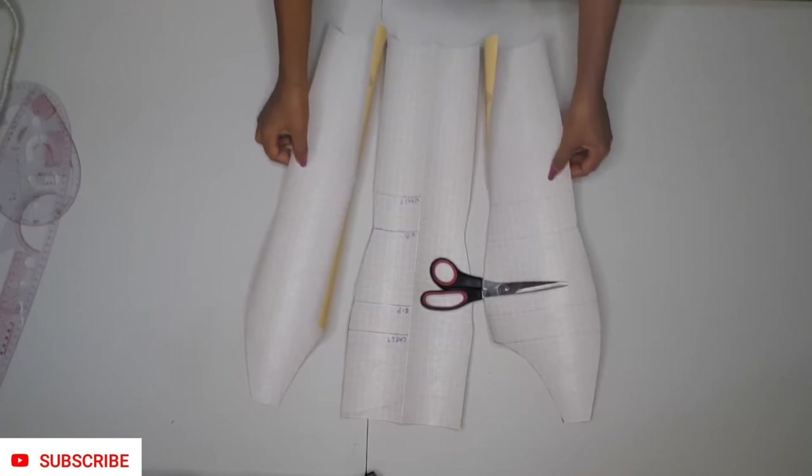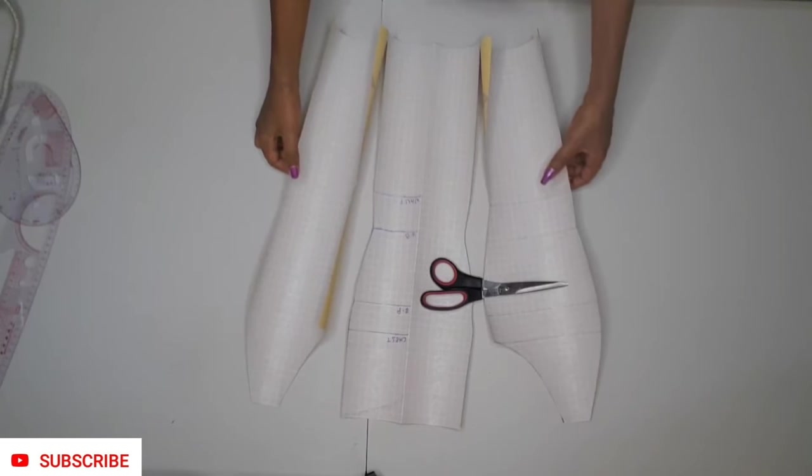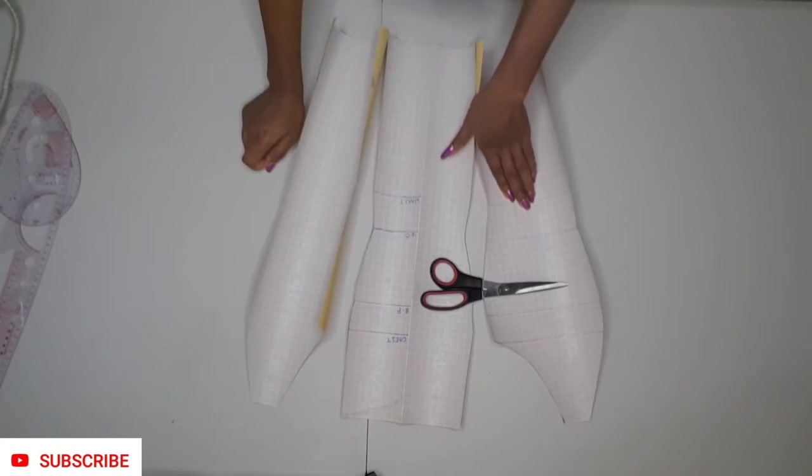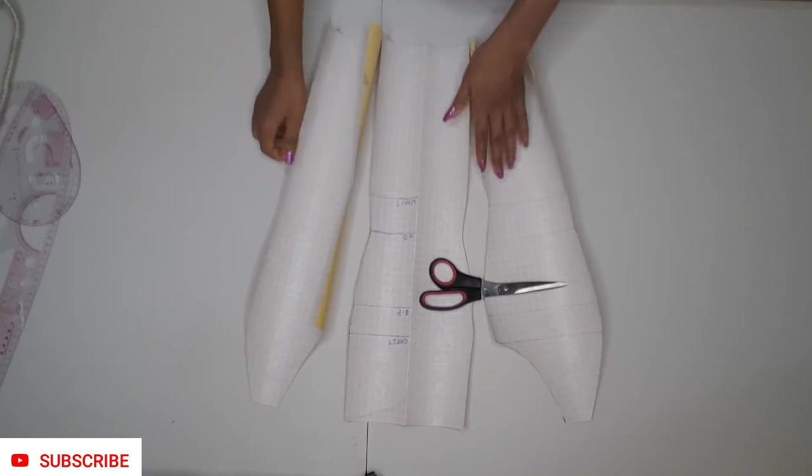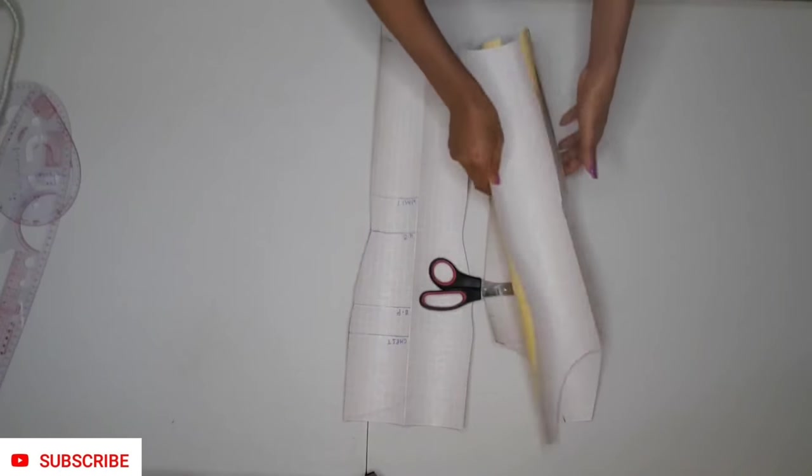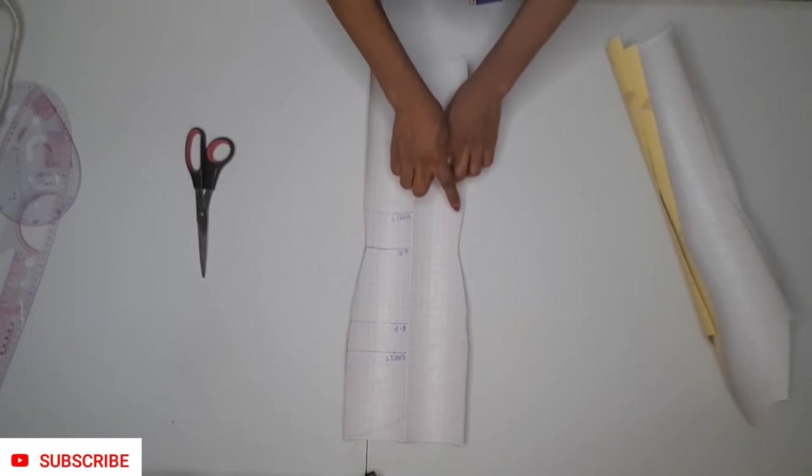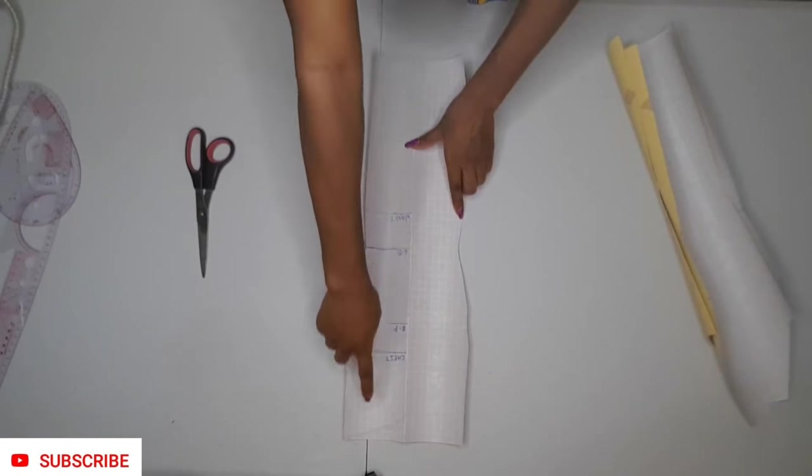I will start off by making use of my off-shoulder bustier pattern that I've made. I have a video on how to make this pattern, so you can check that out in the description box or at the end of this video. First, grab your center piece, but take note that we are making use of only the upper part of this piece.